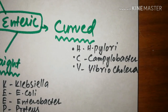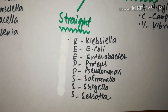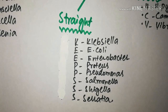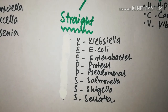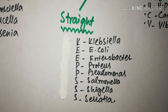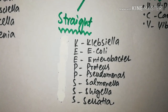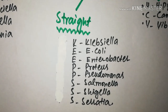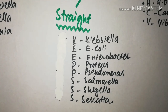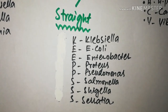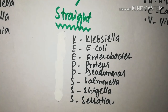The second group, the STRAT type, can be easily memorized by the mnemonic KEEPS. It is a modified definition of KEEPS and includes 1K, 2Es, 2Ps, and 3Ss. The species are Klebsiella, E. coli, Enterobacter, Proteus, Pseudomonas, Salmonella, Shigella, and Serratia.